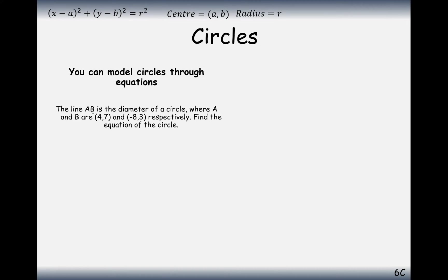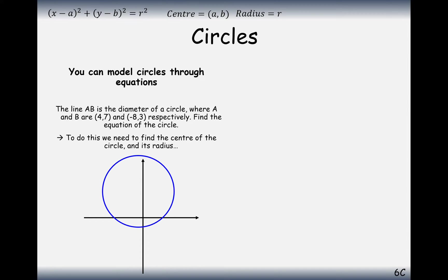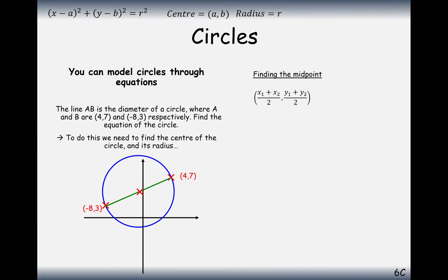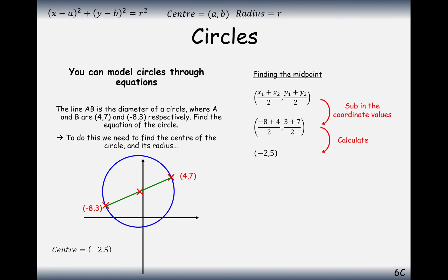A slightly different question now: the line AB has diameter endpoints A = (4, 7) and B = (−8, 3). Find the equation of the circle. The midpoint between these two points is the center of the circle. Drawing a little sketch to help visualize it, the midpoint between (−8, 3) and (4, 7) gives us (−2, 5). So the center of this circle is at (−2, 5).